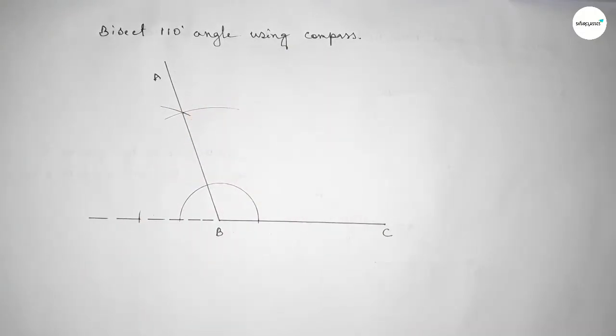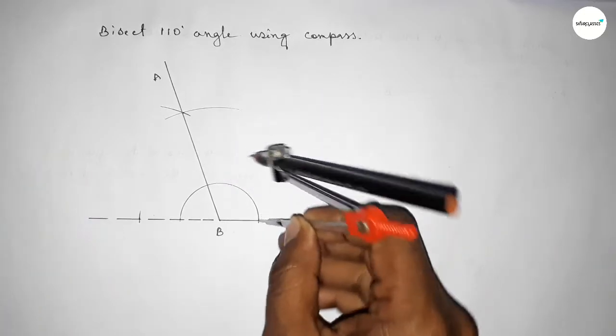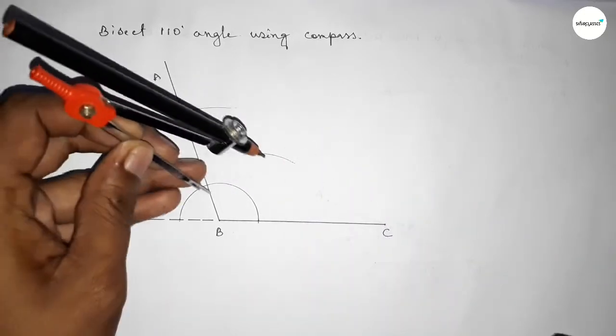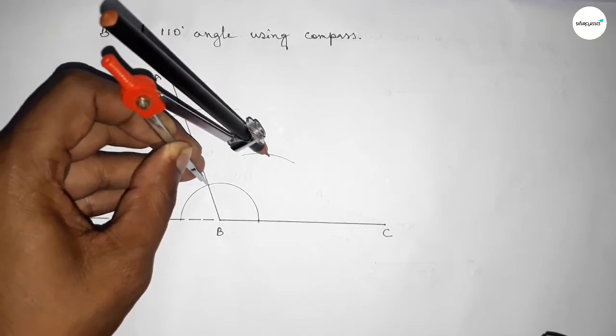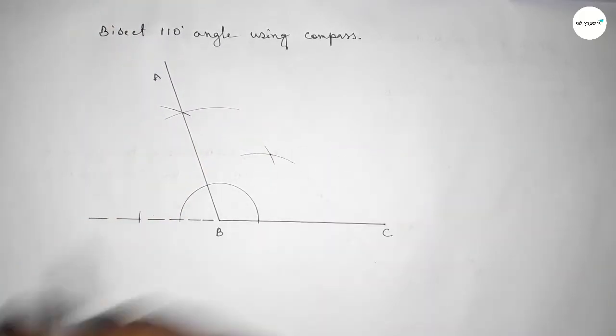Taking point A. Now we have to bisect this angle. Putting the compass here and taking a length, drawing an arc. With the same length, putting the compass here and cutting here, so both curves intersect at a point.